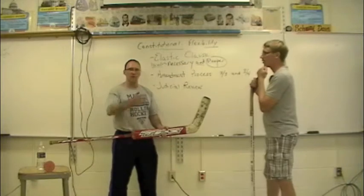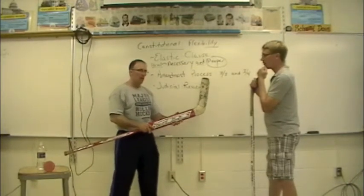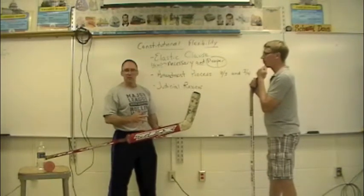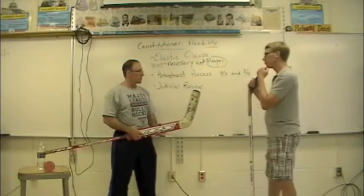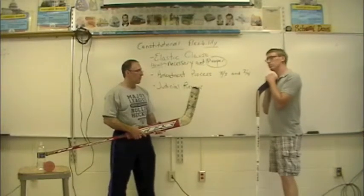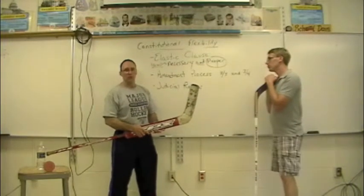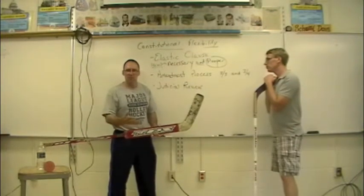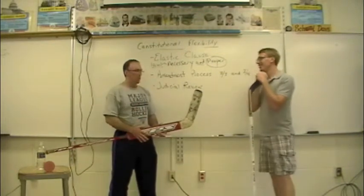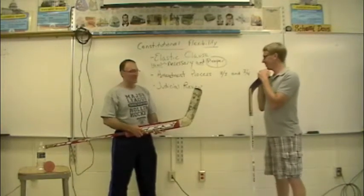Stop and think how different Texas is from New York, or how different California is from New York, or even Florida from New York. To get the states to agree on some of these issues is certainly very difficult. And we can talk more about some of those issues in another day, particularly the Reconstruction Amendments. You might be asking, well, how did they get the Reconstruction Amendments passed when the southern states were all for slavery? Well, they were forced to agree to these things or they wouldn't be admitted. Special circumstances.